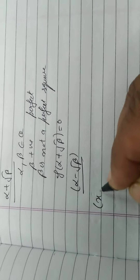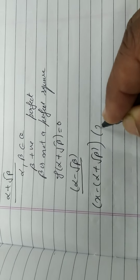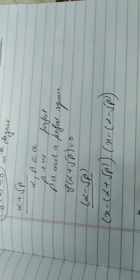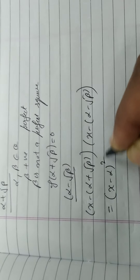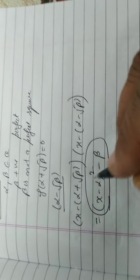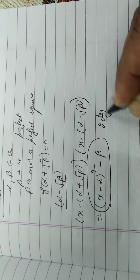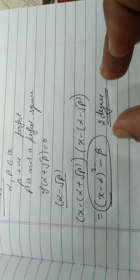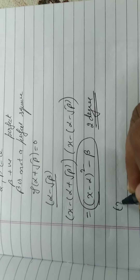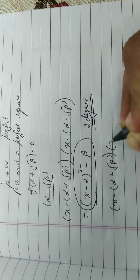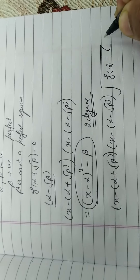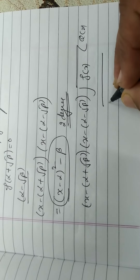यदि α + √β root है और α - √β भी root है, तो ये दोनों मिलकर f(x) को divide करते हैं। इनकी product एक quadratic polynomial बनेगी जिसके coefficients only rational होंगे। जब यह दो degree की polynomial f(x) को divide करेगी, तो एक quotient q(x) और reminder r(x) बचेगा।